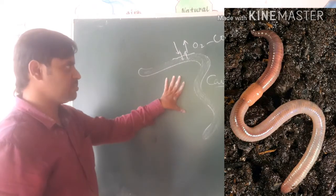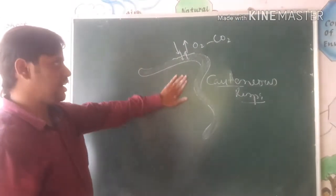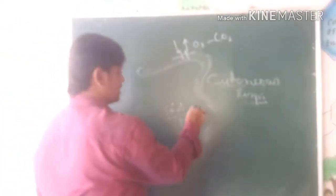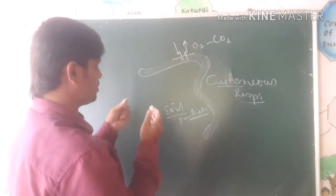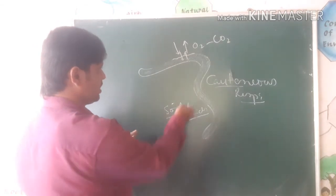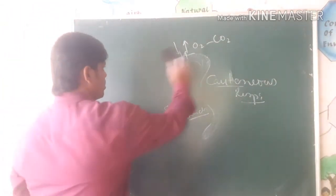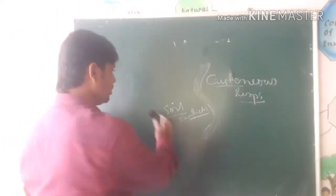Remember, the respiration in earthworm is called cutaneous respiration. The earthworm takes the air that is present in between the soil particles. There is air present between soil particles, and that air is respired by the earthworm. Now let's come to respiration in plants.